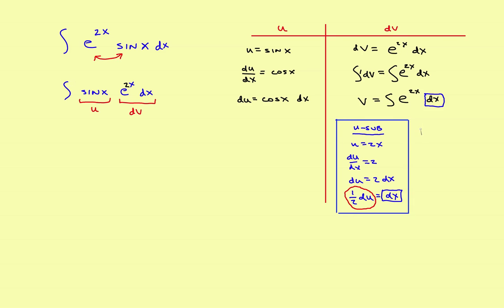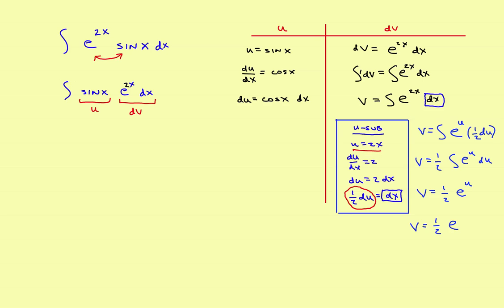With the u substitution, v will be equal to the integral of e to the u times one-half du. Bringing the one-half out in front gives one-half times e to the u, and the antiderivative of e to the u is e to the u. The last step is to substitute back: since u equals 2x, v is equal to one-half e to the 2x.